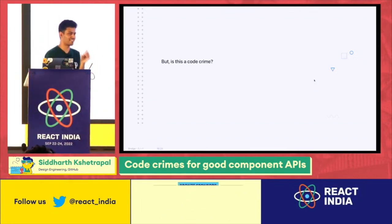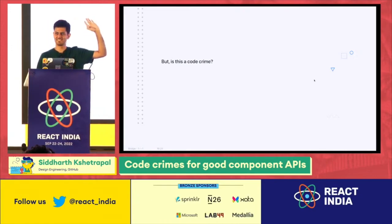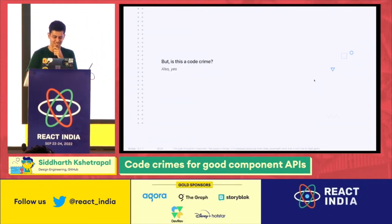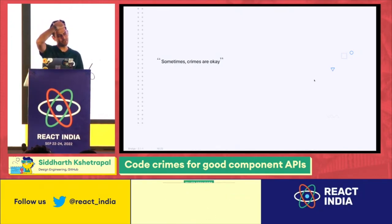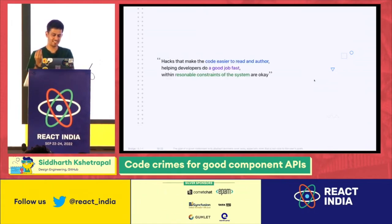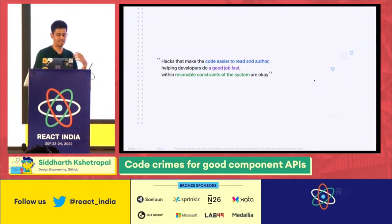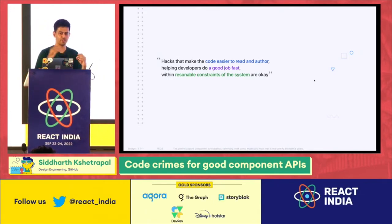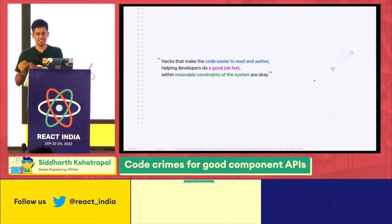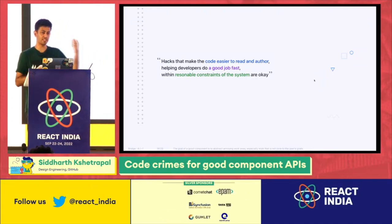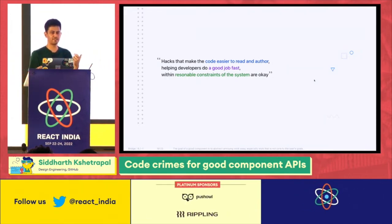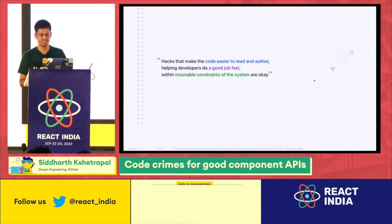There are trade-offs: this has to happen in order — if the overlay renders before the button you wouldn't get it. We also add warnings if you pass unsupported components: ActionMenu only understands Button and Overlay. Is this a hack? Yes, absolutely. Is it a code crime? Yes. But sometimes crimes are okay. Hacks that make code easier to read and author, that help developers do a good job faster, within reasonable constraints of the system — those are okay.